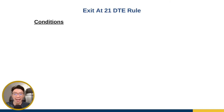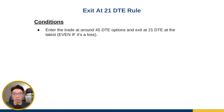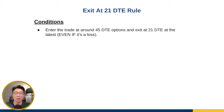To use this exit at 21 DTE rule, there are some conditions. The very first condition is that you want to enter the trade at around 45 DTE, and then exit at 21 DTE at the latest, even if it's a loss. Some people think that only if it's a profit you exit — no. Whether it's a loss or a profit, you want to exit it, because when you do it this way, you're going to have much better performance in the long term.